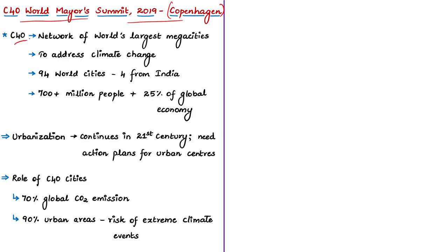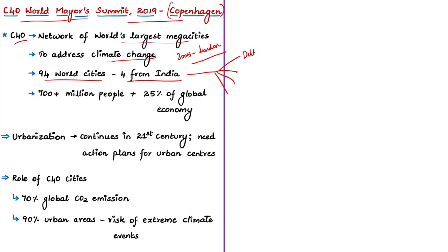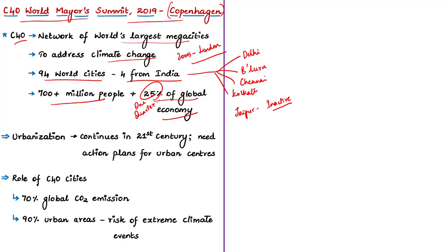The C40 network supports cities to collaborate effectively, share knowledge, and drive meaningful, measurable, and sustainable action on climate change. C40 cities connect 94 of the world's greatest cities. Indian cities part of C40 include Delhi NCT, Bengaluru, Chennai, and Kolkata; Jaipur is mentioned as a temporarily inactive member. This group represents 700+ million citizens and one quarter of the global economy. The mayors of C40 cities are committed to delivering the most ambitious goals of the Paris Climate Agreement at the local level.